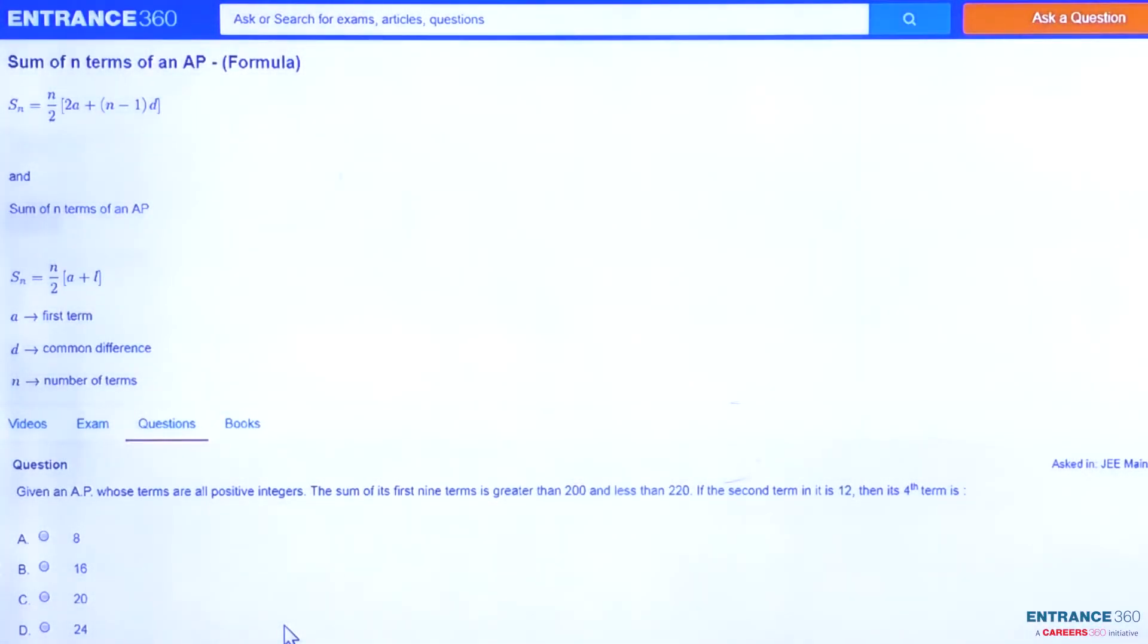Hello students, this is a question from sequence and series asked in JEE Main 2014. We are given an AP where all terms are positive integers. The sum of the first 9 terms is greater than 200 and less than 220, and the second term is 12. We need to find the fourth term of the given arithmetic progression.